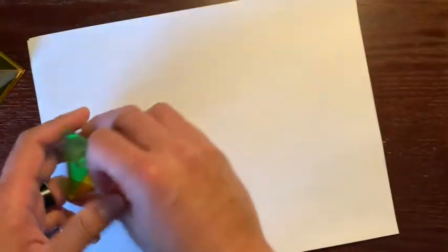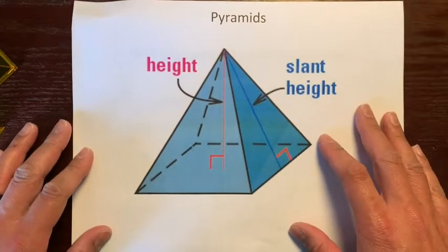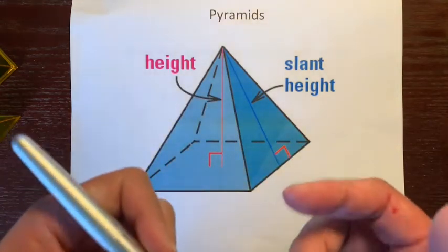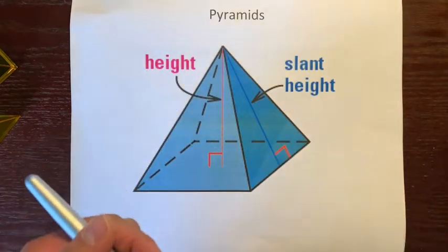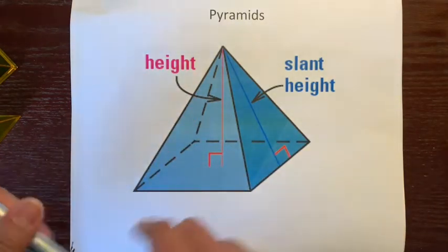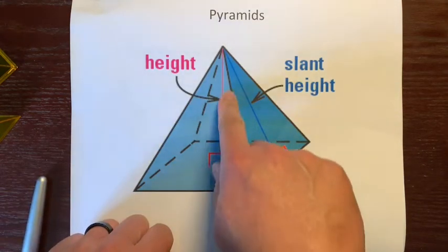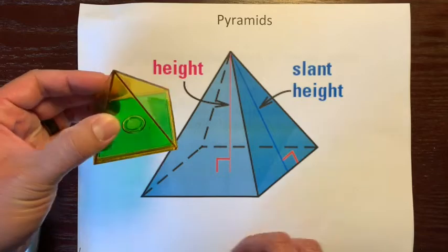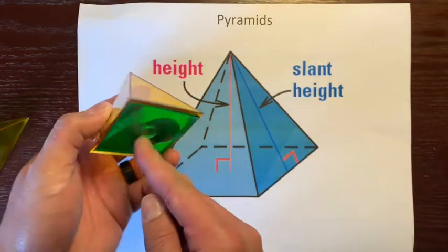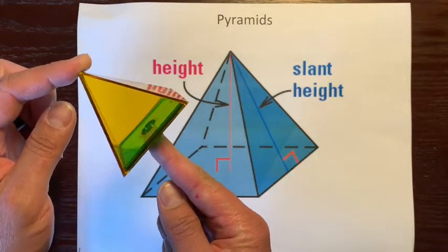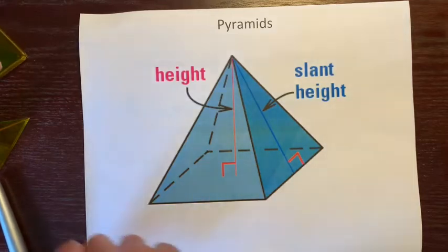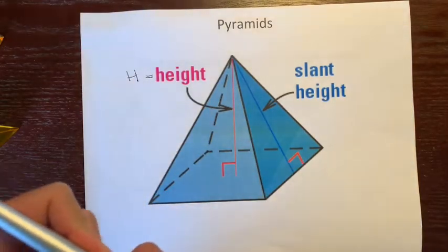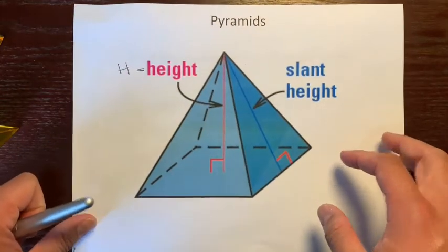Let's look at the parts of a pyramid. The pyramid has one base. And unlike a prism, it has two types of heights. There's the height which goes from the center of the base all the way to the highest point of the pyramid — that vertex right there. With this three-dimensional shape, it starts from the center of that base and goes right to the top. We'll call this H, and we'll reference H later when we talk about the formula for the surface area of a pyramid.